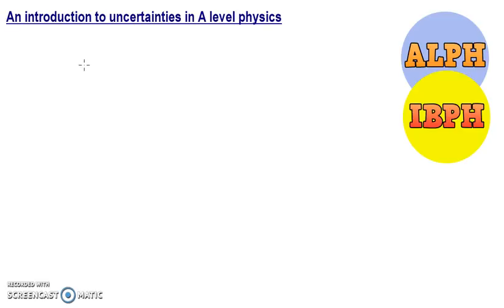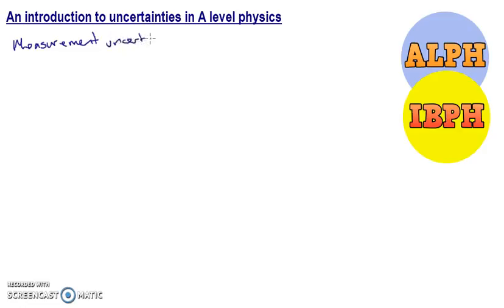We need to talk about taking measurements. When we take a measurement in physics, there's always an uncertainty — we don't know exactly what the value is that we're taking. It depends on a number of things. We're going to look at measurement uncertainties first. When we have an instrument, there is some uncertainty associated with it.